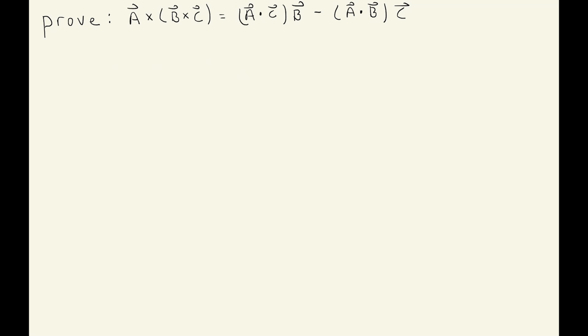We start by writing the left-hand side and then do some manipulations to see if we can recover the right-hand side. We write a cross (b cross c) and consider one arbitrary component — the i-th component. This is a cross product, so we write it using the Levi-Civita symbol. The index of this cross product is i, so we write epsilon sub ijk, summing over j and k. The first vector is a, so that takes the index j.